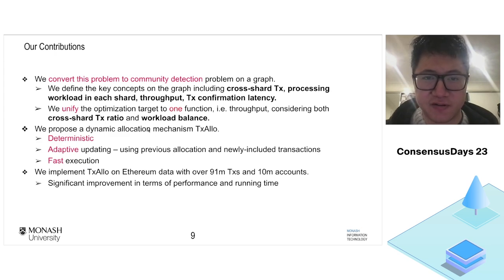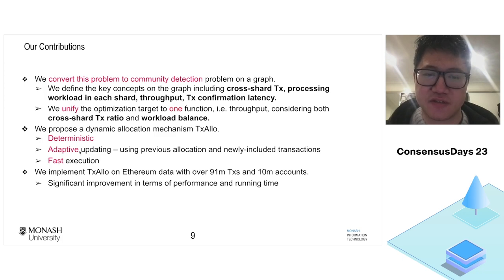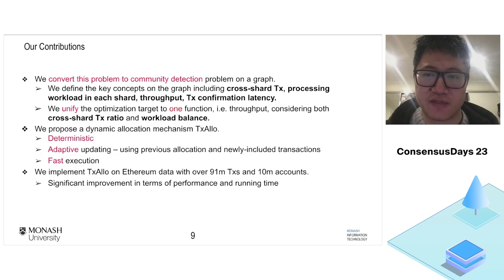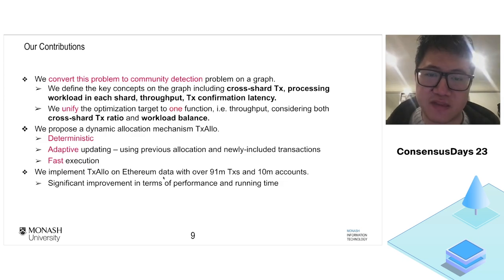We propose a dynamic allocation algorithm that is deterministic and can adaptively update the allocation result. It uses the previous allocation result and newly included transactions to accelerate the allocation algorithm, achieving very fast execution. We conduct experiments on Ethereum data.